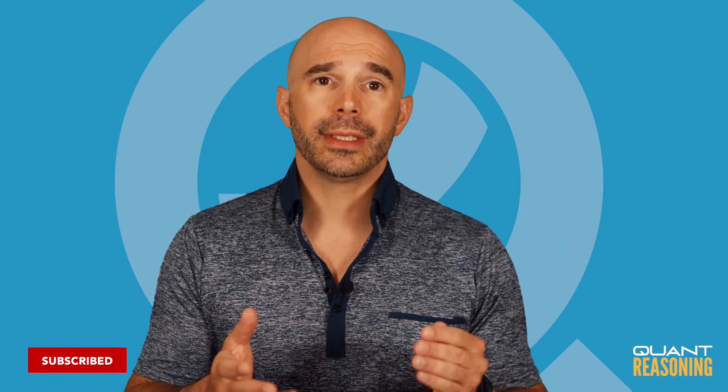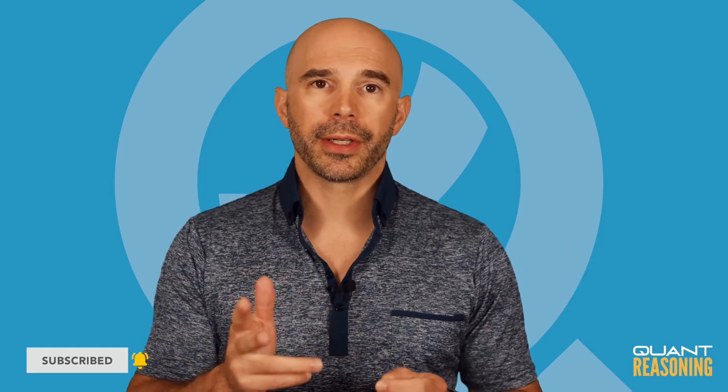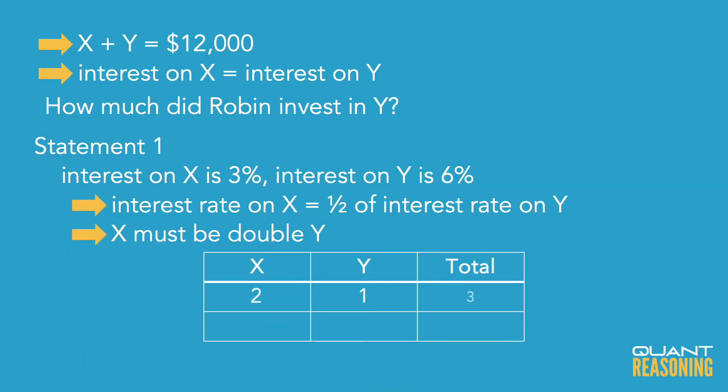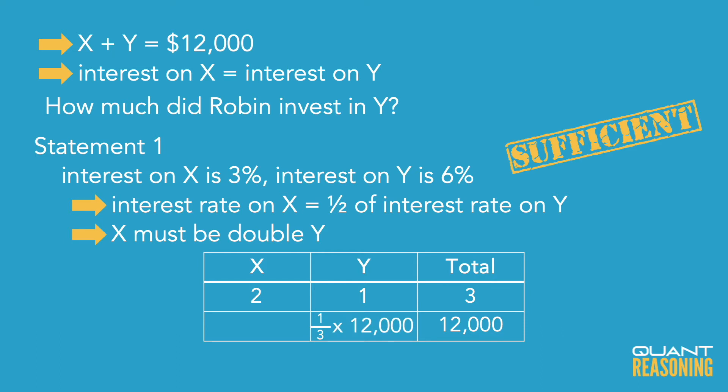So I could set up a ratio table and say that the amount of money invested in X to Y to total is 2 to 1 to 3, and I know that the total is $12,000. From my ratio table, I can now see that the investment in Y is one third of $12,000.